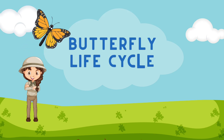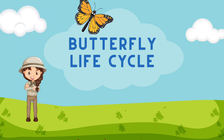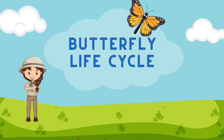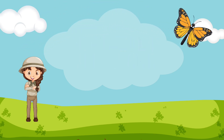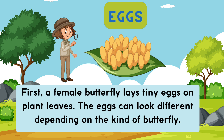Today's topic is the butterfly life cycle, which consists of different stages. First, a female butterfly lays tiny eggs on plant leaves. The eggs can look different depending on the kind of butterfly.